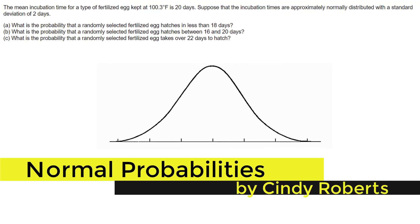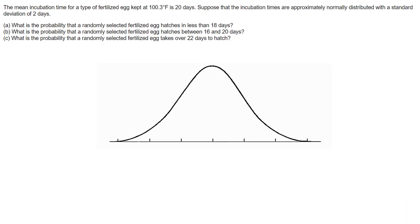We're given some information: the mean incubation time for a type of fertilized egg kept at 100.3 degrees Fahrenheit is 20 days. The incubation times are approximately normally distributed with a bell-shaped curve and a standard deviation of two days.